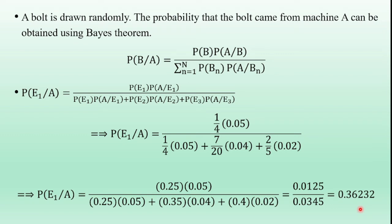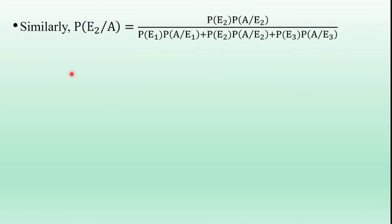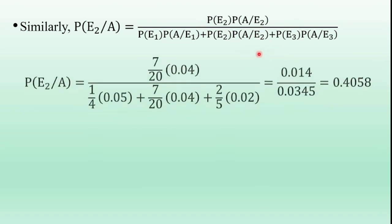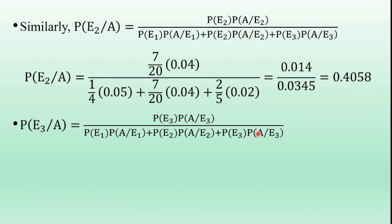Similarly, using Bayes' theorem, we can determine P(E2|A). P(E2|A) = P(E2)·P(A|E2) divided by the same denominator: P(E1)·P(A|E1) + P(E2)·P(A|E2) + P(E3)·P(A|E3). The denominator is the same as in the previous term. Substituting all values into the right-hand side, we get P(E2|A) = 0.4053.